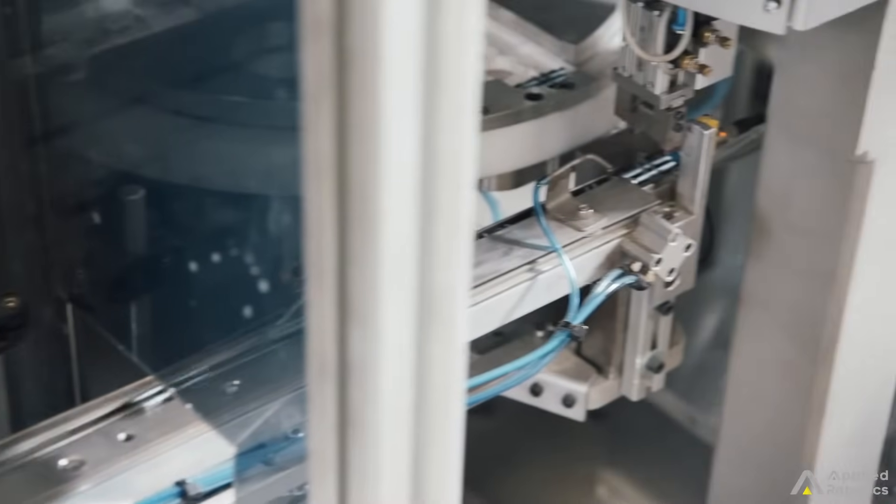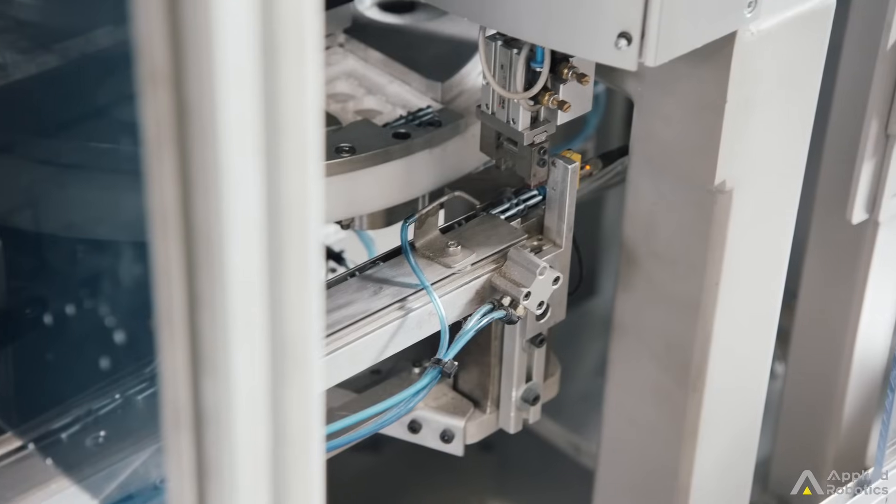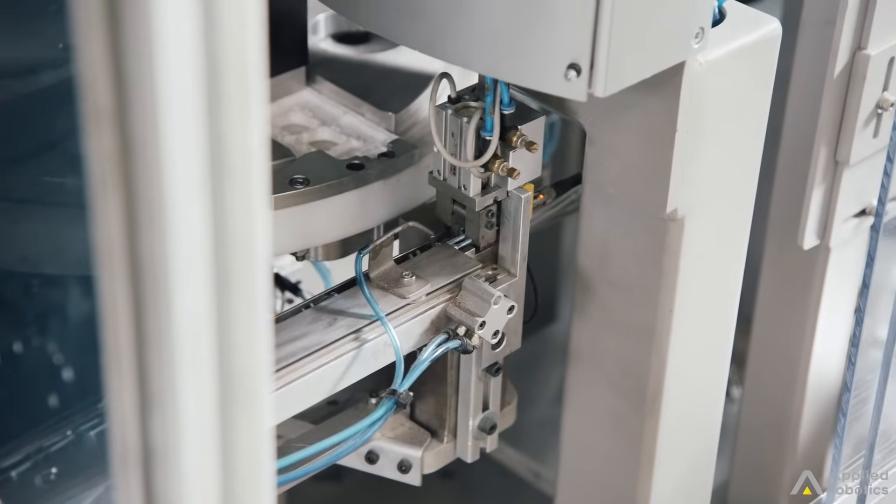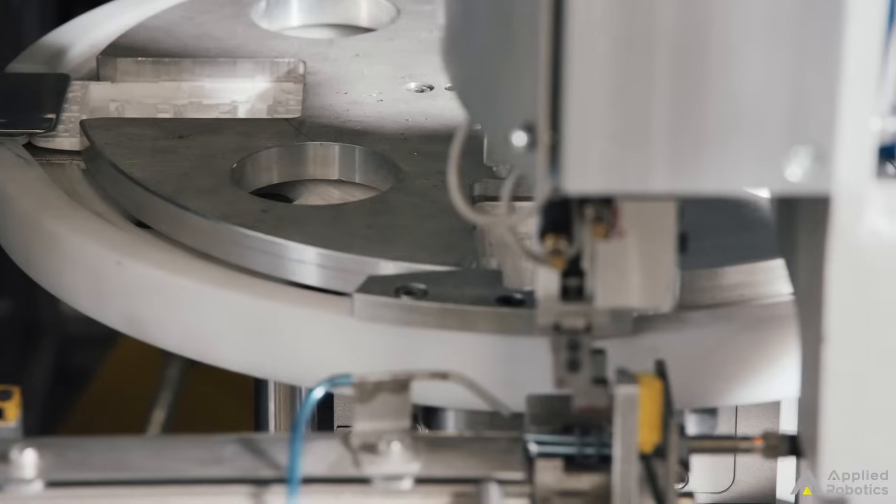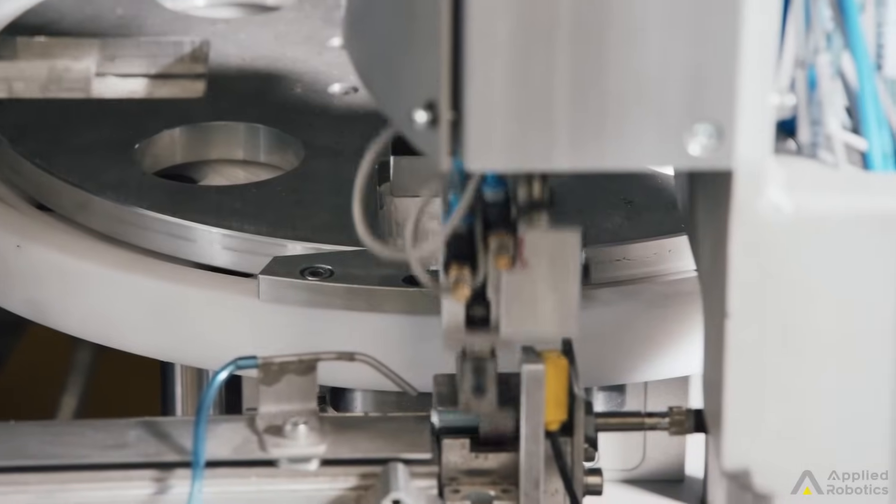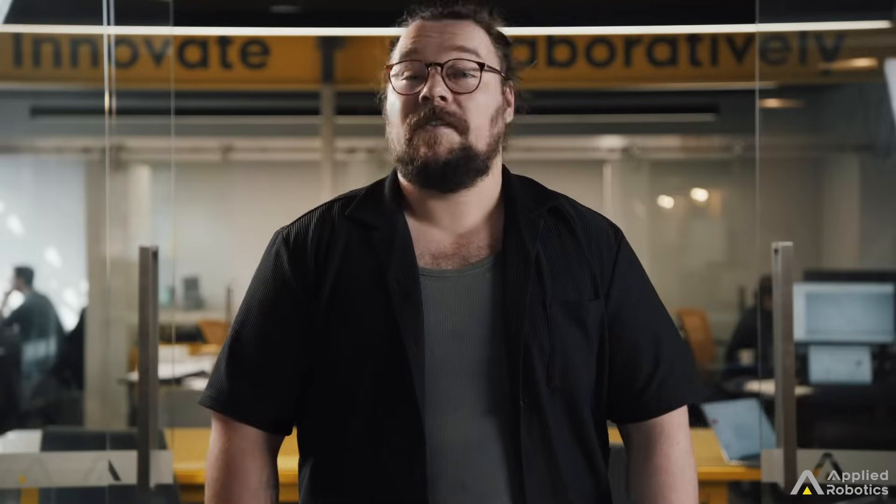Those pieces feed up through the rotary bowl feeders and are orientated to be picked by their conveyors or placed by the SCARA robots in the cell. There are ejectors in the bowl feeders for the light switch assembly and the screw, so if they aren't orientated right on the way up they get shot back out to the bowl, not jamming up the system and keeping it running.